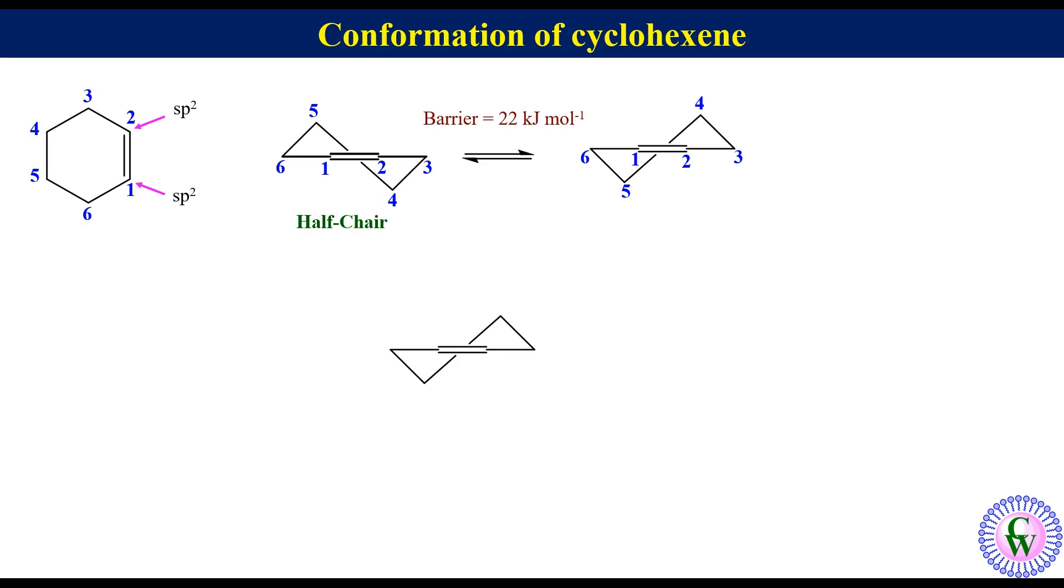However, they are not quite oriented in the same way as in cyclohexane. These two orientations are called pseudo axial and pseudo equatorial.